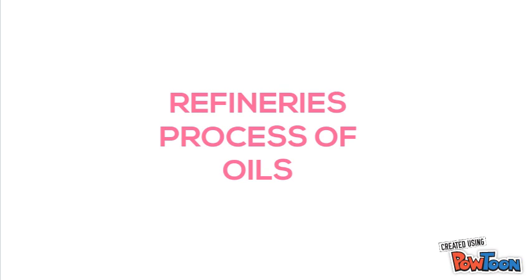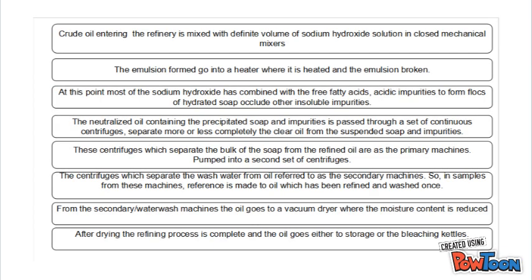Refinery's Process of Oils. Crude oil entering the refinery is mixed with a dilute volume of sodium hydroxide solution, including mechanical measures. The emulsion formed goes into a heater where it is heated and the emulsion broken. At this point, most of the sodium hydroxide has combined with free fatty acids as impurities to form a flow of hydrated soaps that occlude other insoluble impurities. The neutralized oil containing the precipitated soaps and impurities is passed through a set of continuous centrifuges to separate more or less completely the clear oil from the suspended soap and impurities.